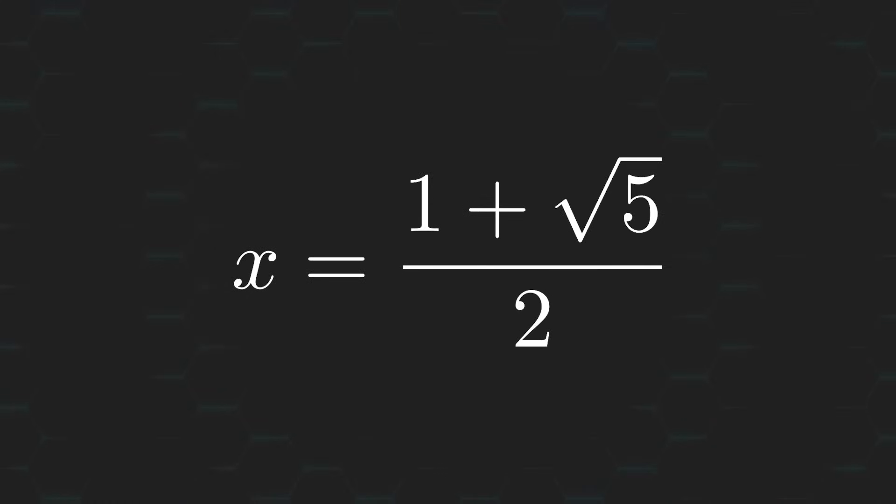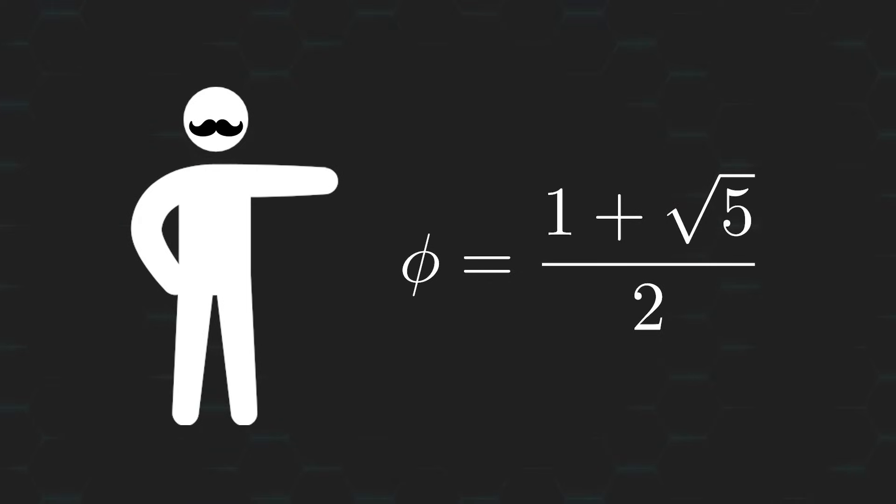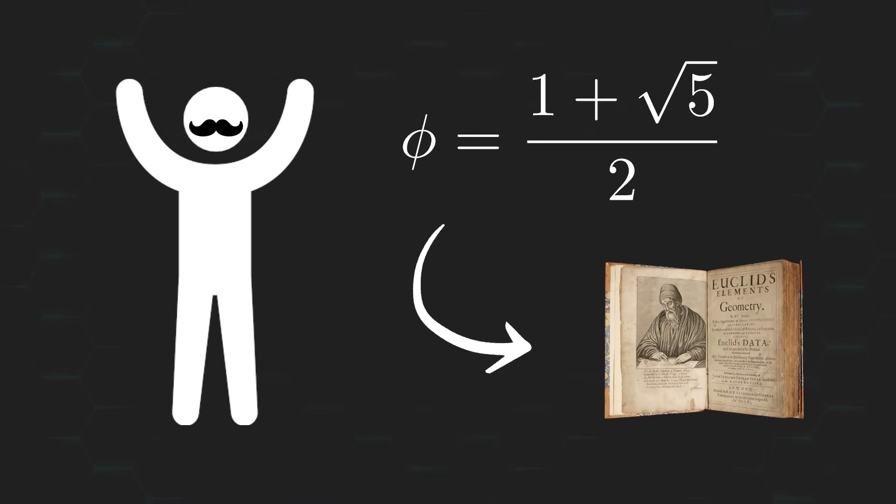If this at all looks familiar to you, it's because you've probably seen it before, maybe as phi instead of x. Yep, this is exactly the formula for the golden ratio. Some of you might be surprised to see this pop up here, given that you might have been made aware of the golden ratio through the visualization of the Fibonacci sequence. But in reality, the golden ratio is deeply rooted in geometry, with mentions of this magical number dating all the way back to 300 BCE in Euclid's elements.